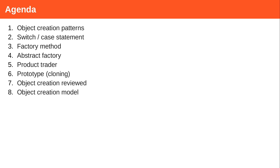Once we've gone through our examples, we will recognize that all these patterns next to each other cover a small but important domain: how to create an object nicely. We will review this and put things next to each other to give you a decision model of how to think about creating your objects right.